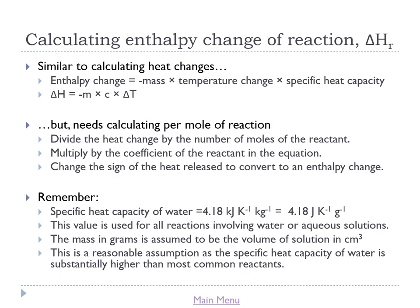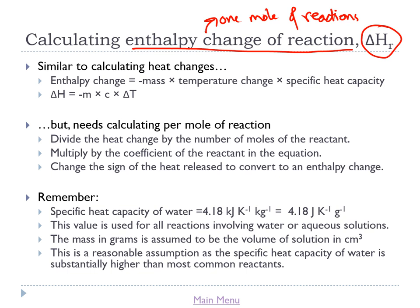Now we know what enthalpy and enthalpy changes are, the next obvious question is how do we calculate them? We're going to look at calculating what we call enthalpy changes of reactions — the enthalpy change when one mole of a reaction occurs under standard conditions. We give this the symbol ΔHᴿ. That little subscript R after the delta H means it's an enthalpy change of reaction.